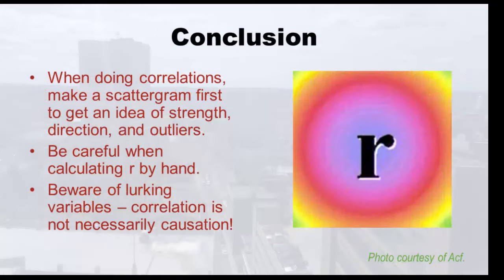In conclusion, when doing correlations: first make a scattergram to get a visual idea of strength and direction, and to look for outliers. Then go on and calculate r by hand, being careful because it's a big calculation. Finally, when you interpret r, be careful of lurking variables and remember that correlation is not necessarily causation. And now — time for some ice cream.